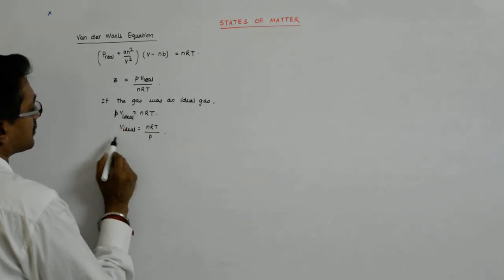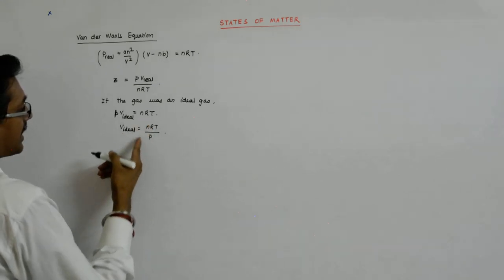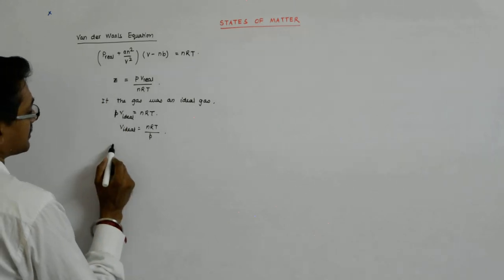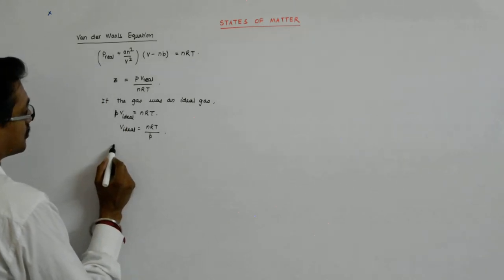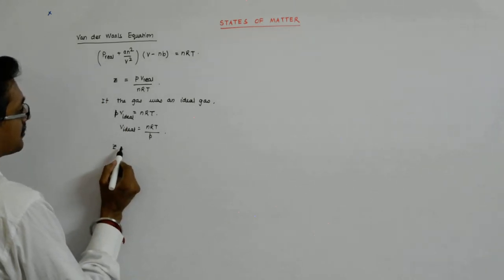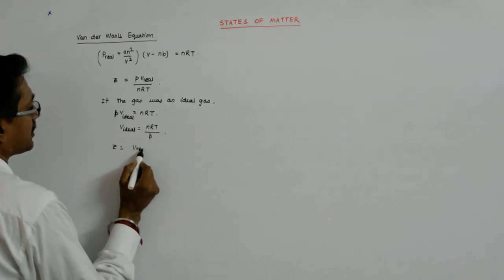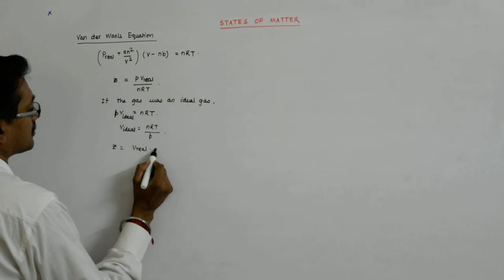Now what do we get? We get that nRT upon P is this. So Z becomes, Z becomes V real into...